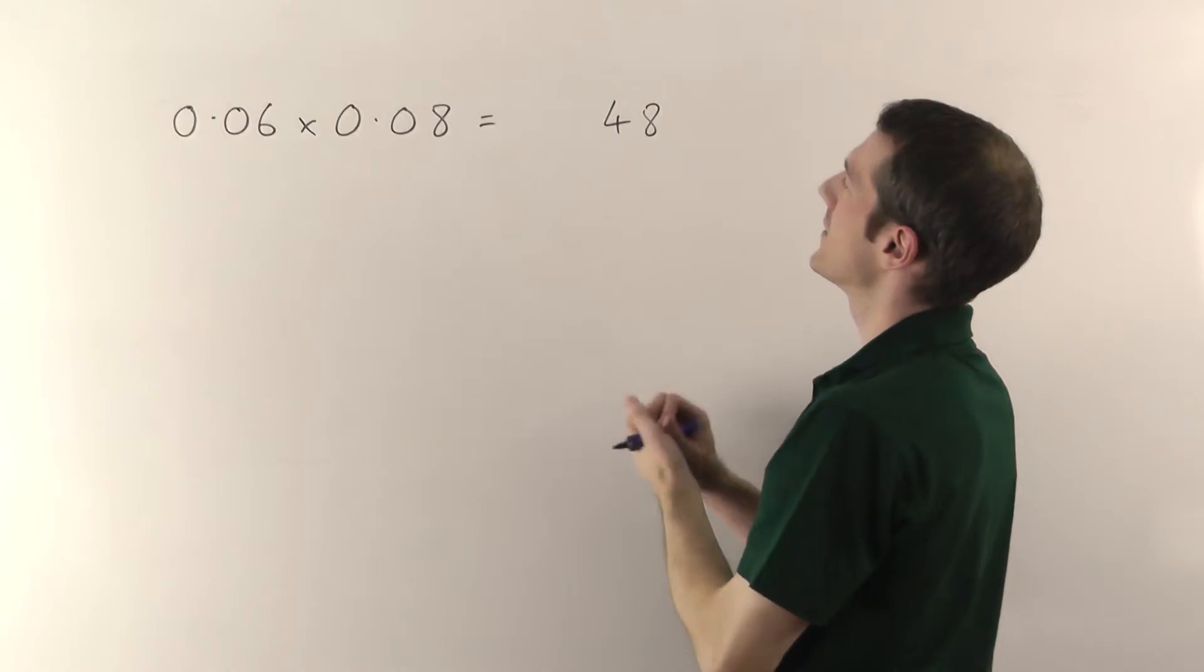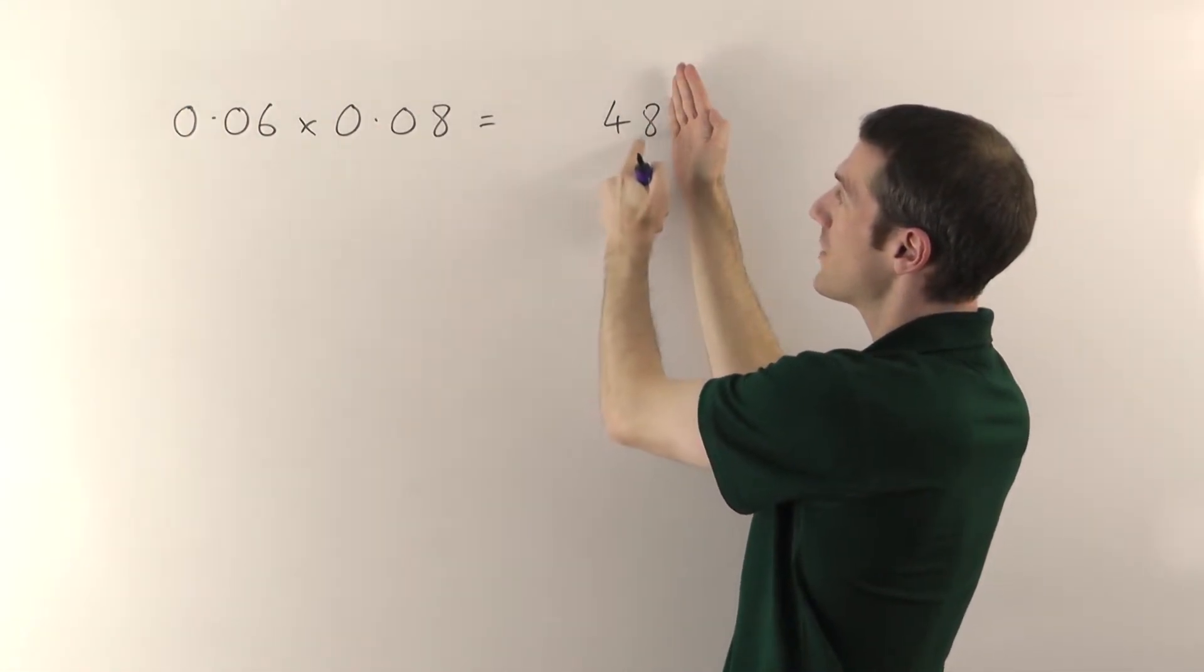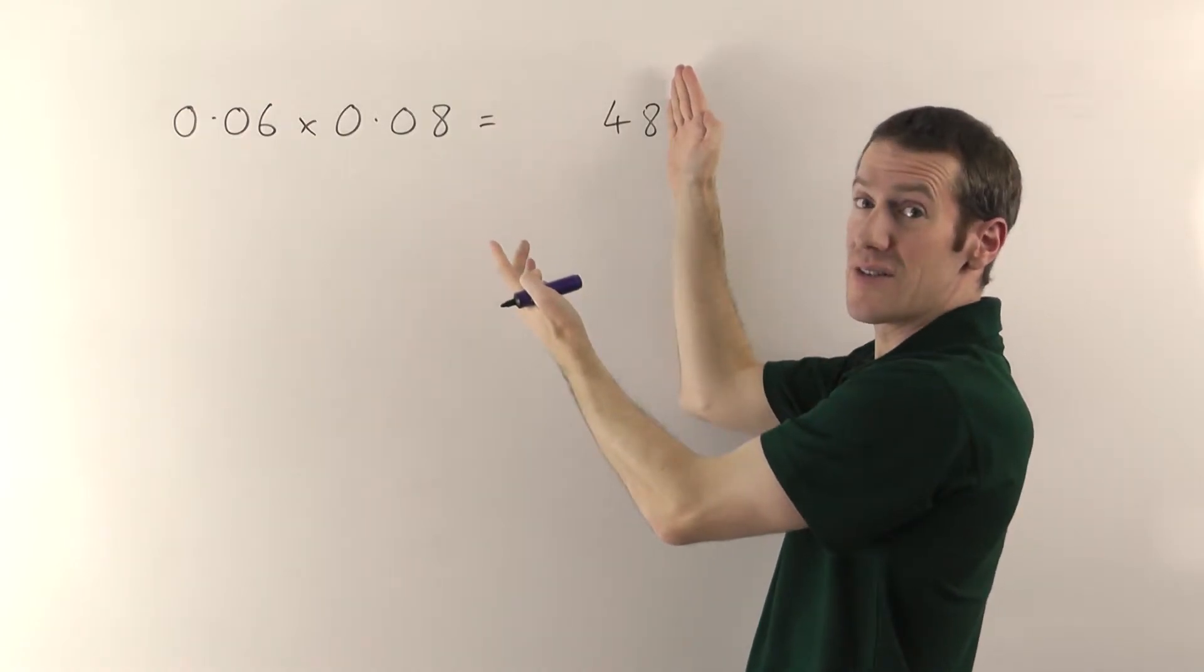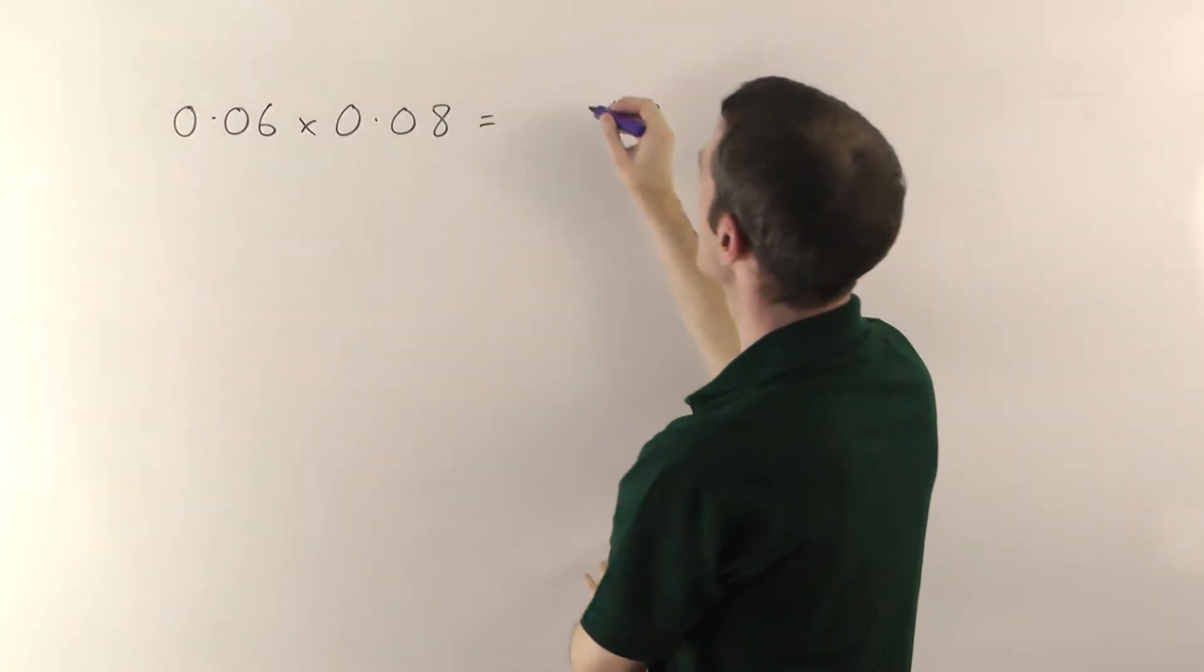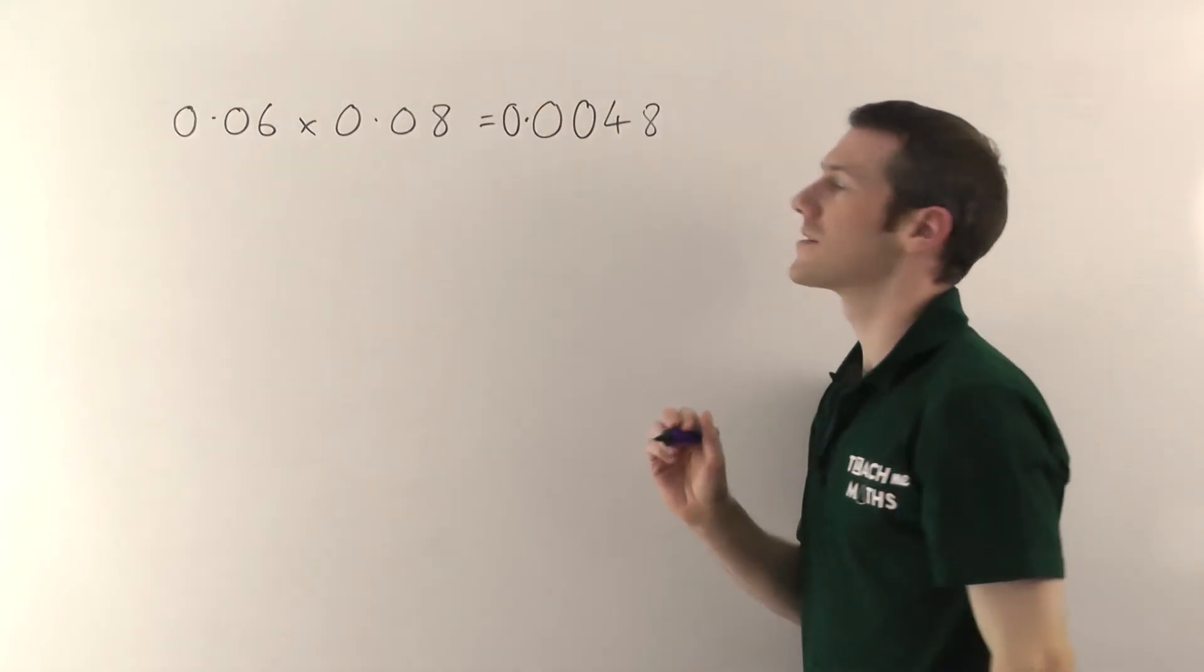Now, the 48, that's always going to be up to the end of your number, so I need 1, 2, 3, 4 decimal places altogether. And you just fill out with zeros to get the number you need. So in this case, I need 0, 0, then the decimal point, and another 0 in front of it.